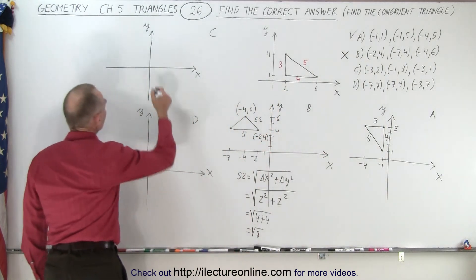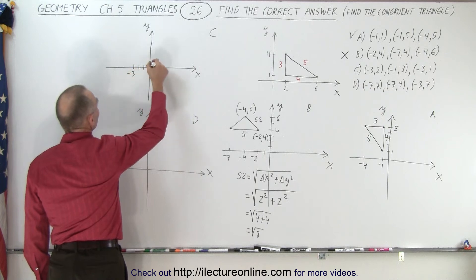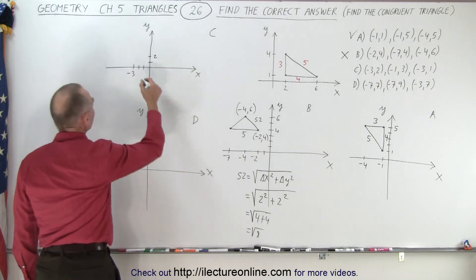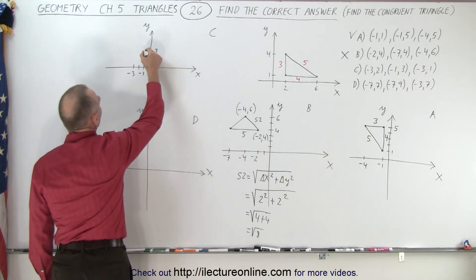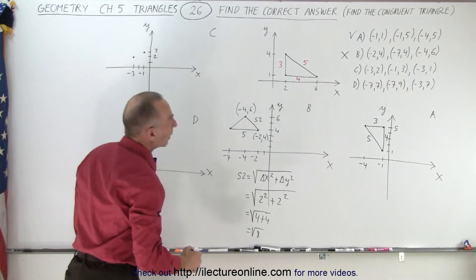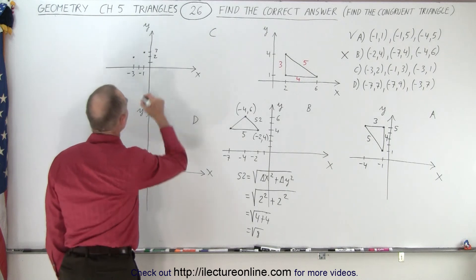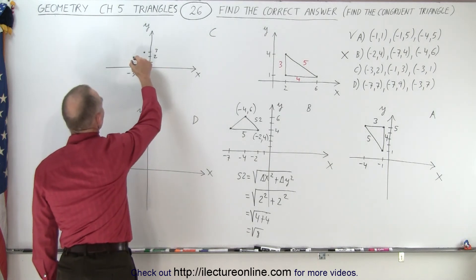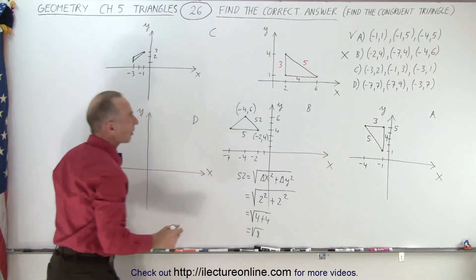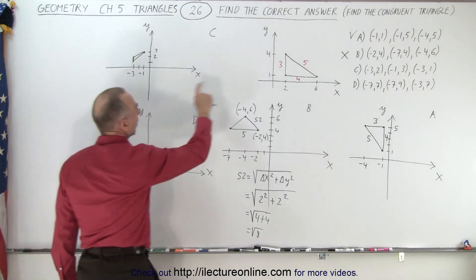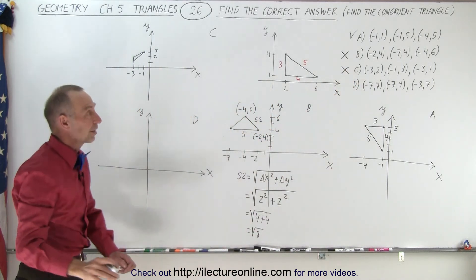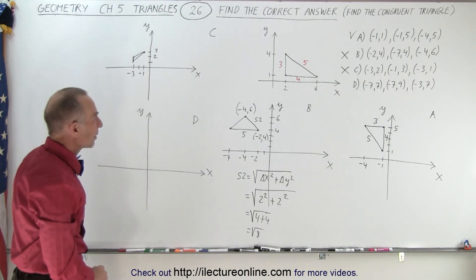For Triangle C, the points are (-3, 2), (-1, 3), and (-3, 1). Right away, I can see by the shape and the length of the sides that these are much smaller than what we have. I can visually see that C is not a congruent triangle without even measuring.